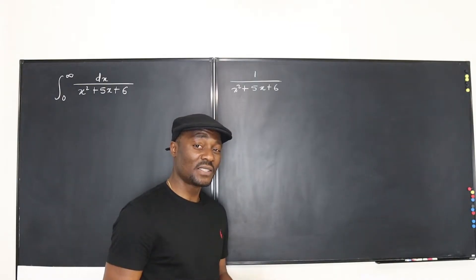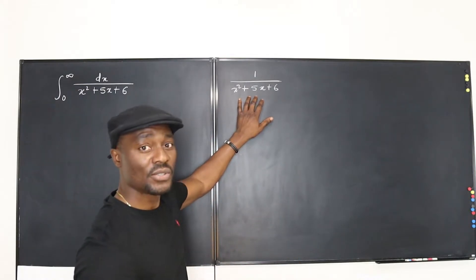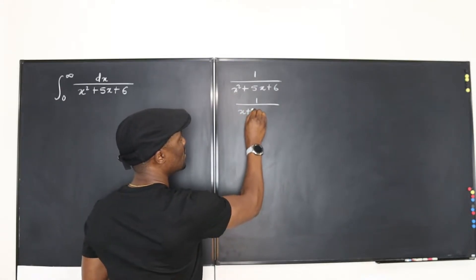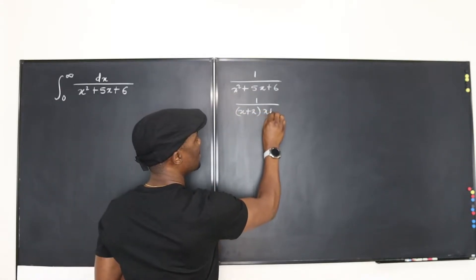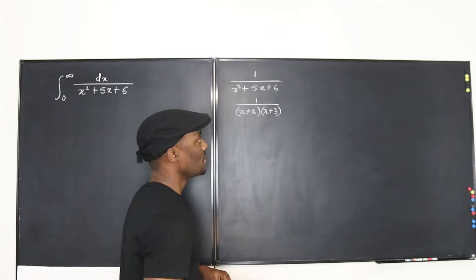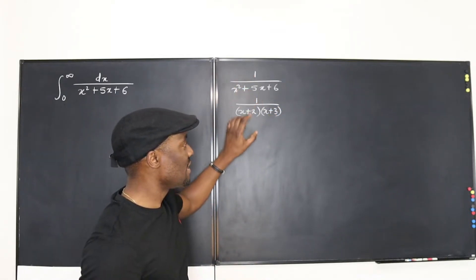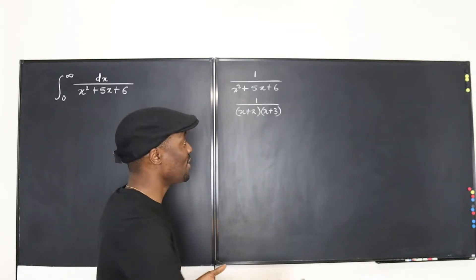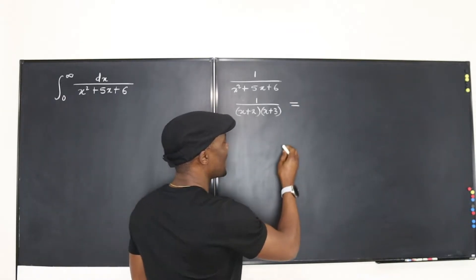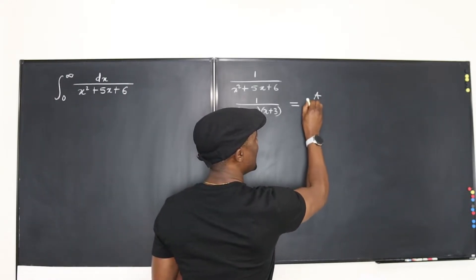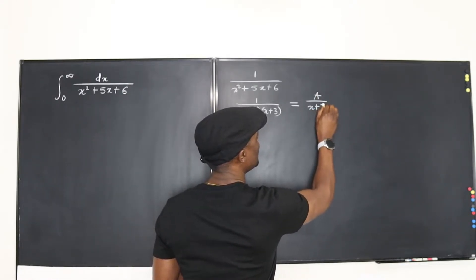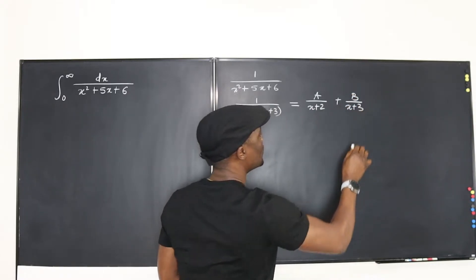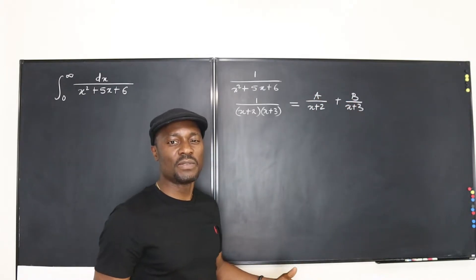The first thing we tell ourselves is that the expression can be rewritten in factored form as (x+2)(x+3). So if we rewrite this, we have linear factors, which makes life a lot easier. We can assume there were two fractions written as A over (x+2) plus B over (x+3). We just want to know what A and B are.